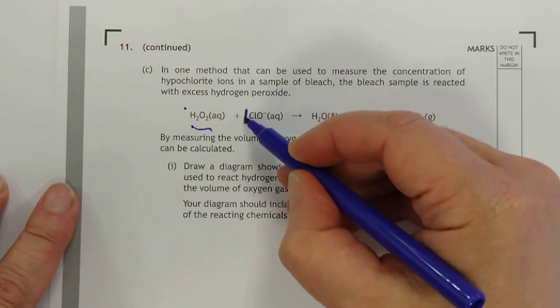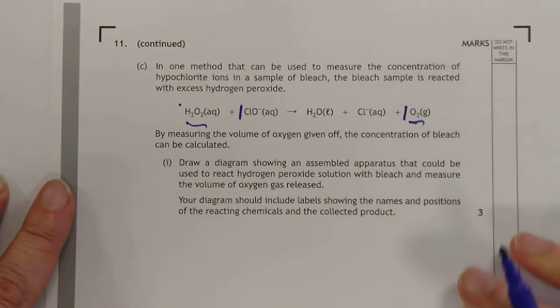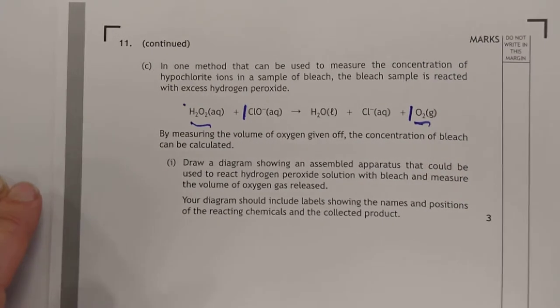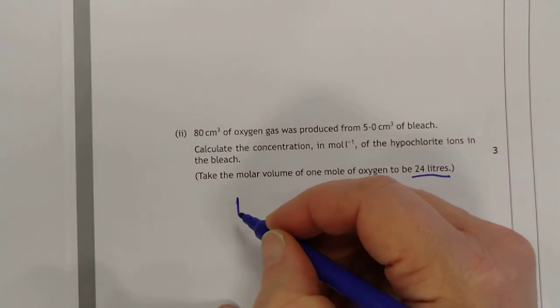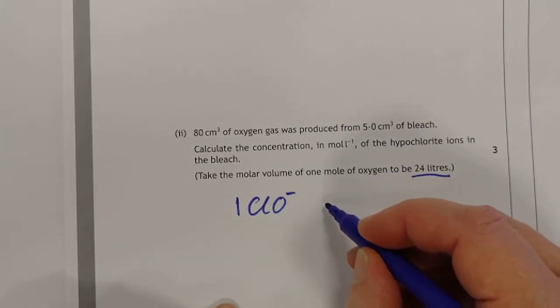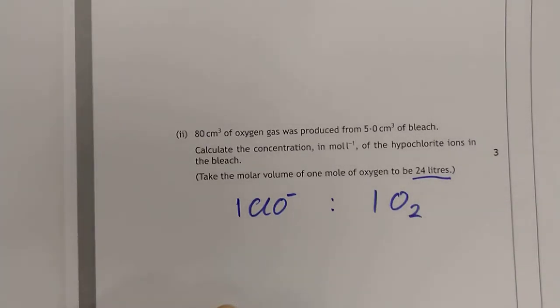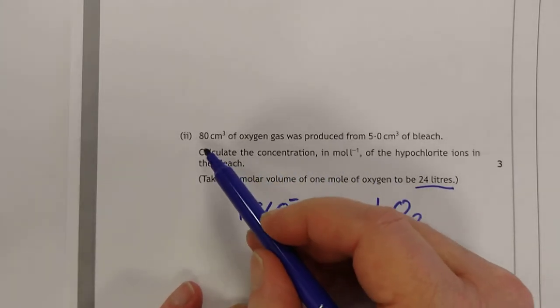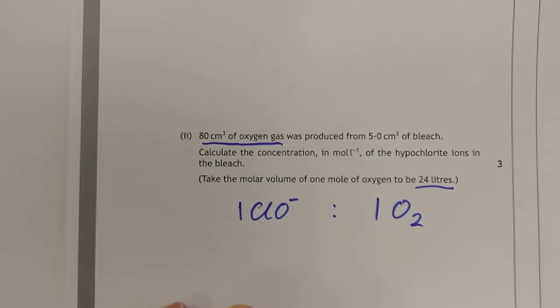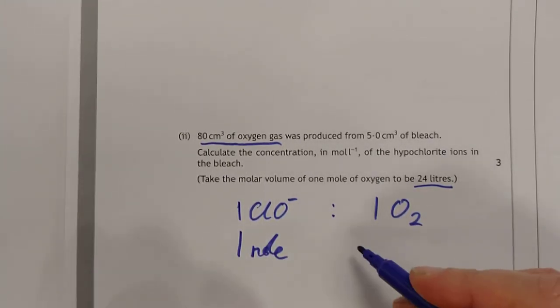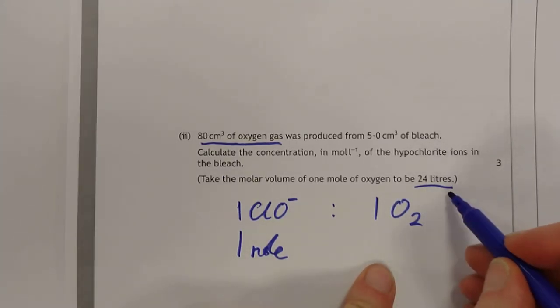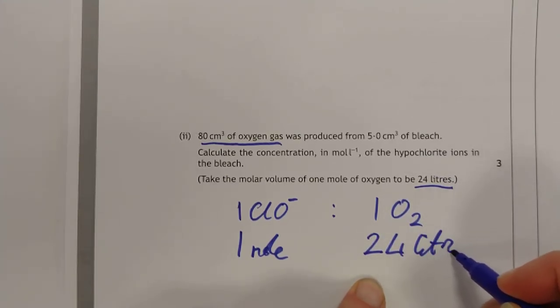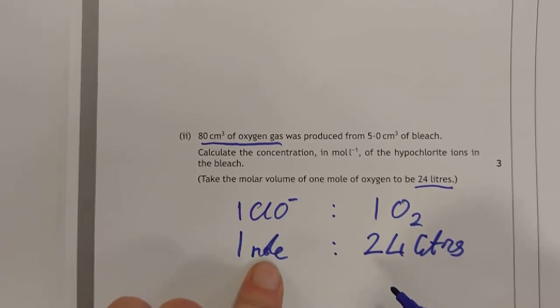Let's spin down to the actual question. It says here, we got 80 cm3 of oxygen gas from 5 cm3 of bleach. Calculate the concentration of the hypochlorite ions in the bleach. They give you the molar volume, so we're probably going to need to use that. If we go back up to here for a second again, the actual equation. This is 1 mole, and 1 mole. So the mole ratio is 1 to 1 here. So 1 hypochlorite would produce 1 oxygen.